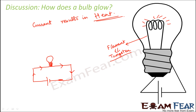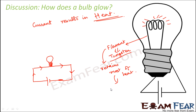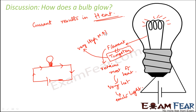Most of the power consumed by the filament is given as heat, and only a portion of it is given as light. So it becomes very hot and emits light — that is how the bulb glows. We use tungsten because it has a very high melting point. When the filament becomes so hot, there are chances a metal might melt, but since tungsten has a very high melting point, it doesn't melt easily.